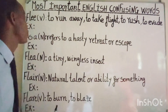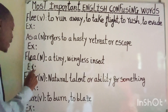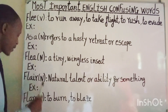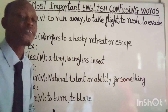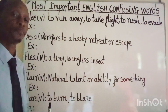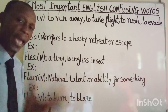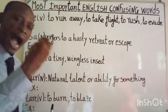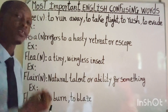The words 'flee' spelled F-L-E-E, and 'flea' spelled F-L-E-A, as well as 'flair' spelled F-L-A-I-R, and 'flare' spelled F-L-A-R-E, are often confused because they have the same pronunciation. However, they have vastly different meanings and spellings, which makes them homophones. So you should use them appropriately, because that is crucial to effective English communication.